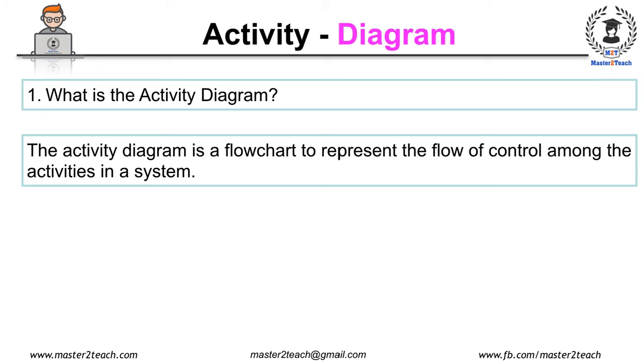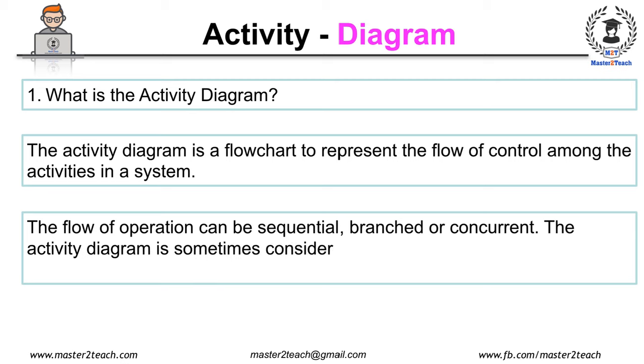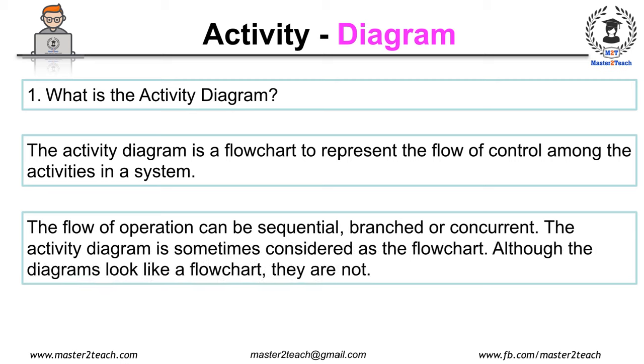The flow of operation can be sequential, branch, or concurrent. The activity diagram is sometimes considered as the flow chart, although the diagrams look like a flow chart, but they are not.